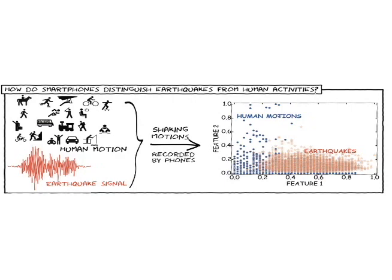These features give us the best characterization of the different types of motions. And then the phones will memorize these features. In the future, if it's experiencing any type of movement, it will tell whether this is an earthquake or a human activity.